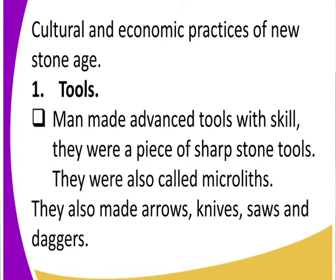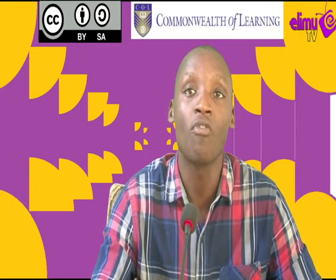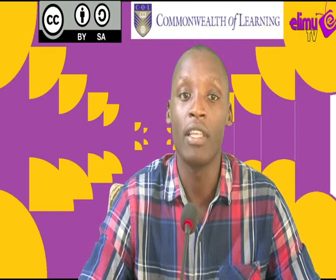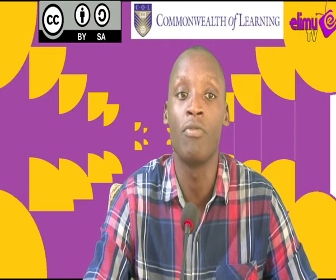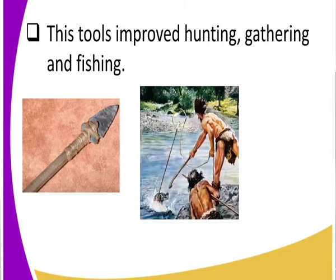When you hear about knives, arrows, daggers, and saws, that tells you that the hunting skills of man greatly improved. For example, look at the spear — you can see how hunting skills improved. Also, instead of catching fish using a spear, man began using a hook and line — a fishing hook and line to catch fish.